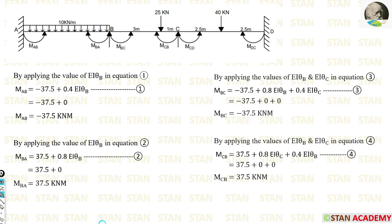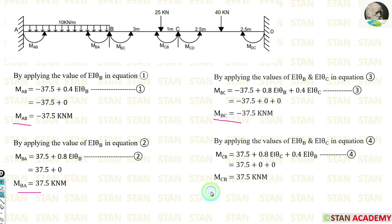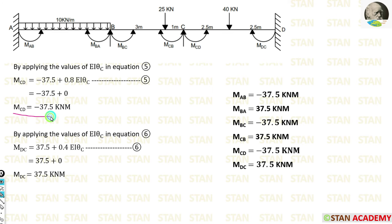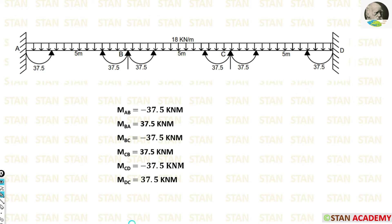Now we apply the values EIθB = 0 and EIθC = 0 back into all the slope deflection equations. After substituting, we obtain the six moments: MAB, MBA, MBC, MCB, MCD, and MDC. All moments in the beam have now been calculated.